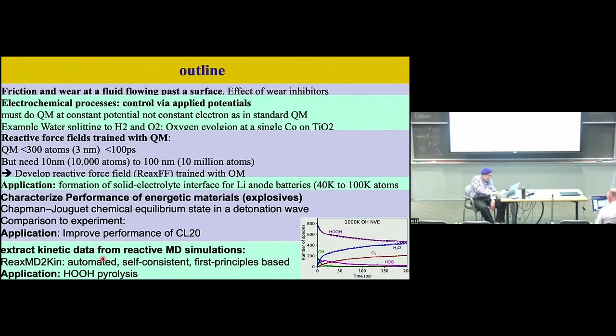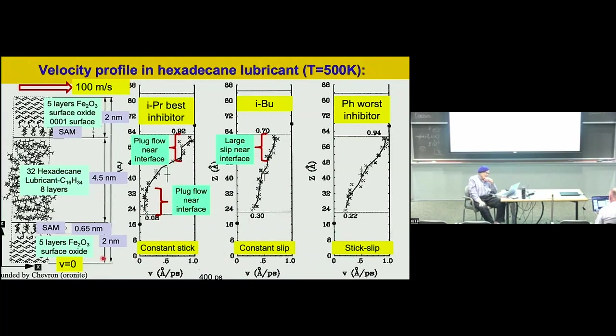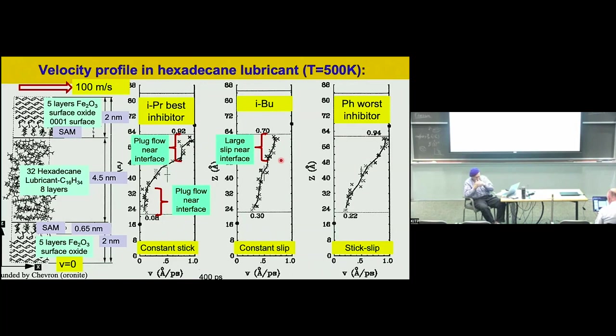In the flow system, we had funding from Chevron to look at wear inhibitors. We looked at various wear inhibitors of different performance. What we found is that the best wear inhibitors basically have plug flow next to the interface — at the interface it's stick, and then all the shear is in the fluid. Worse than that are ones that have slip at the interface, because there's wear occurring there.